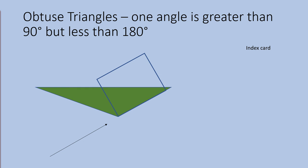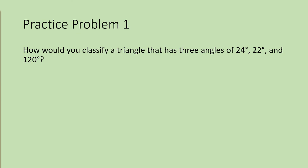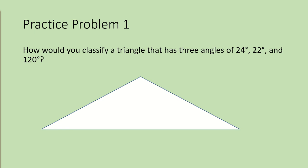Now let's look at some practice problems. If you have a problem to solve with no drawing, that's okay. In this case, you can draw your own triangle. It doesn't have to be perfect as long as it has three sides. You can label your angles and your drawing will not be accurate, but that's okay. Your drawing is just to help you see the angles and their measurements. Once you have labeled your triangle, you can decide what type of triangle it is. Since this triangle has one large angle that measures greater than 90 degrees but less than 180 degrees, this triangle is classified as an obtuse triangle.